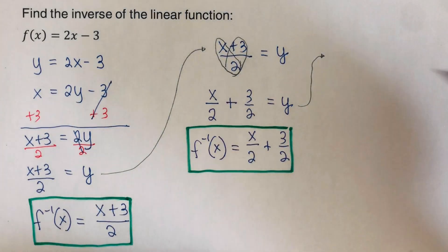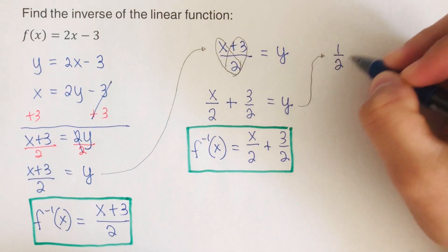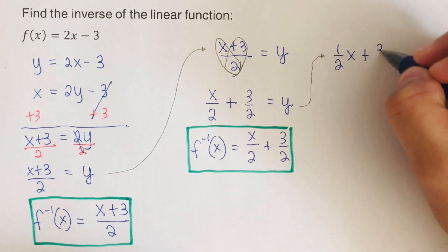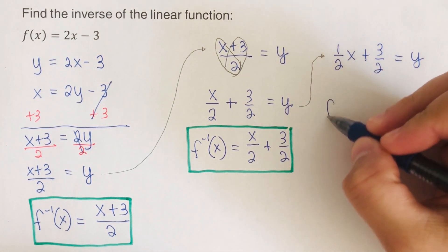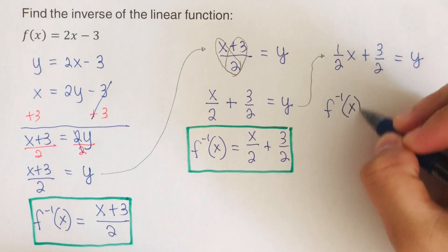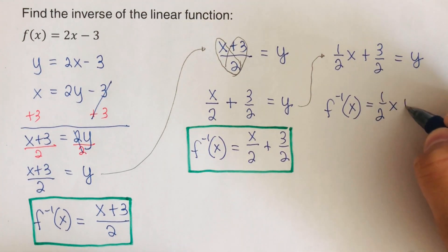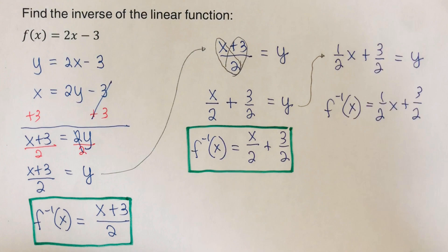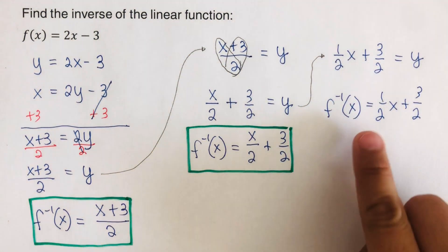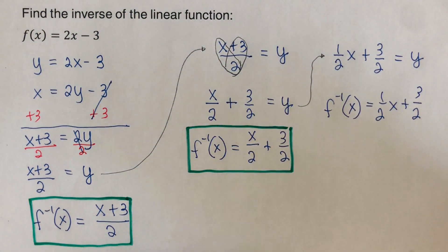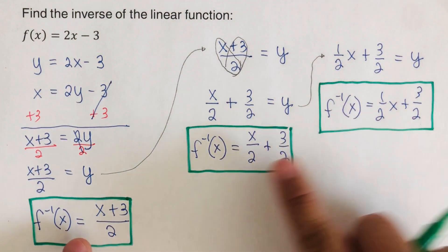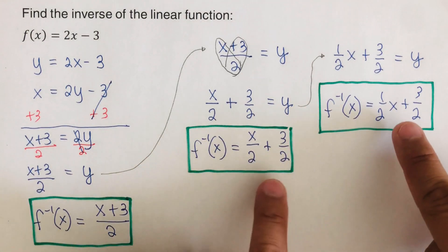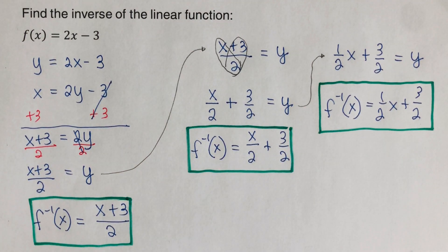We can also rewrite this as (1/2)x + 3/2 = y, so f⁻¹(x) = (1/2)x + 3/2. This is in y = mx + b form. All three inverse expressions we have are equivalent equations — they are exactly the same.